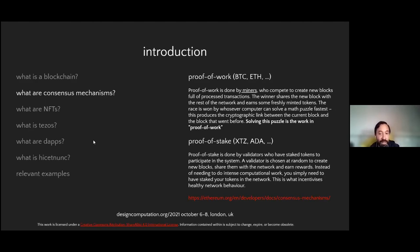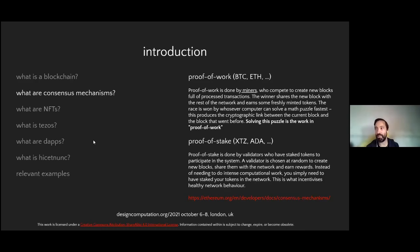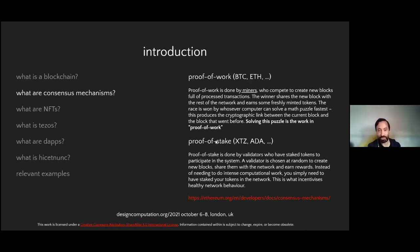Proof of stake is a little different. Doing this intense computational work and the energy consumption behind it isn't an issue with proof of stake. It's done by validators who stake tokens to participate in the system. A validator is chosen at random to create a new block, shares that with the network, and earns some rewards. Instead of needing to do intense computational work, you just need to have staked tokens in the network — that's what incentivizes healthy network behavior. The issue is that you have to put up a big chunk of tokens to be a useful part of the network, but it doesn't have the energy consumption issues that proof of work does.